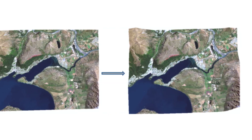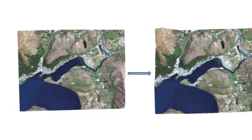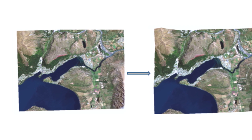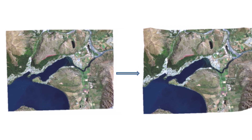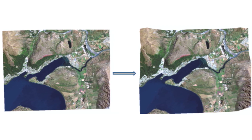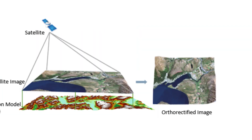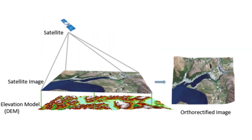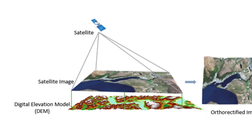The orthorectification tools in ArcGIS perform the following tasks: remove internal and external effects in an image, and georeference by assigning more accurate coordinates to the final image.